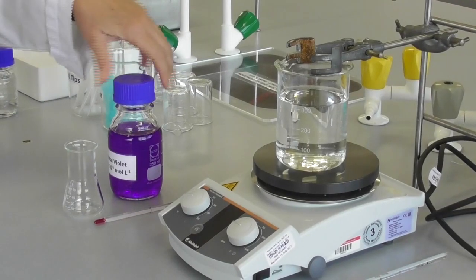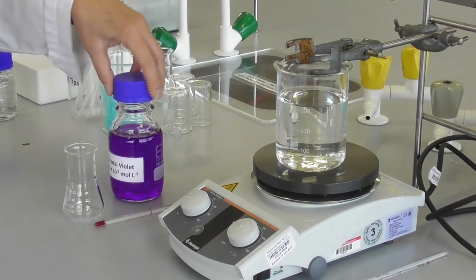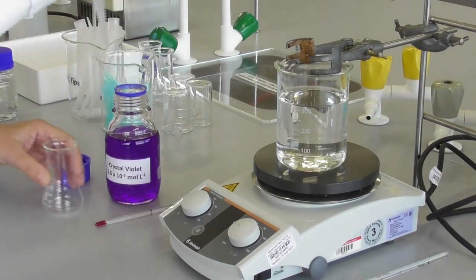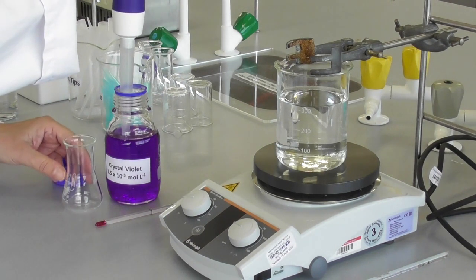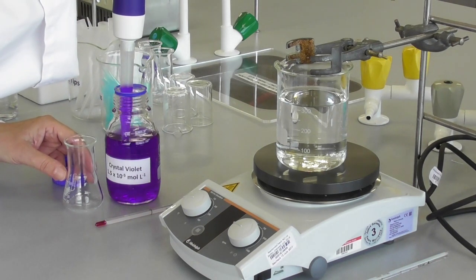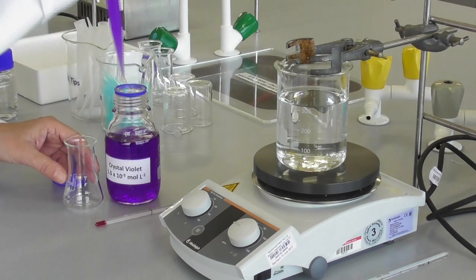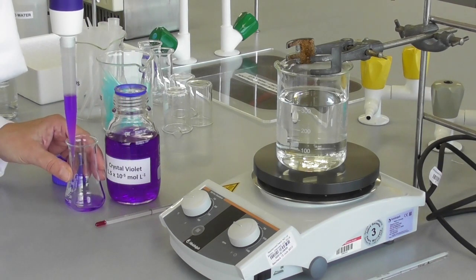To measure the absorbance over time at different temperatures, we have to change our method. We start by measuring out 4 times 9 ml of crystal violet into a wide-necked flask.